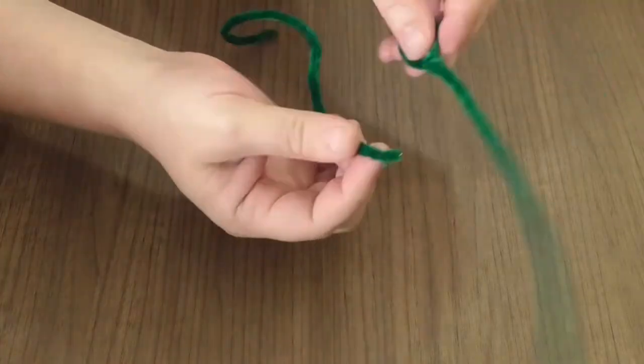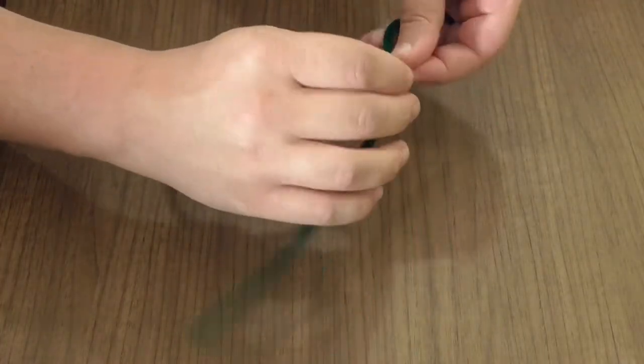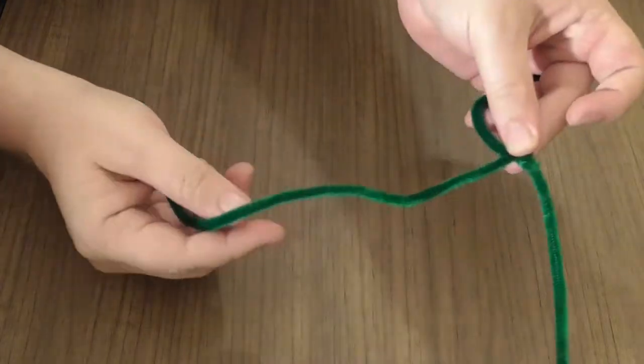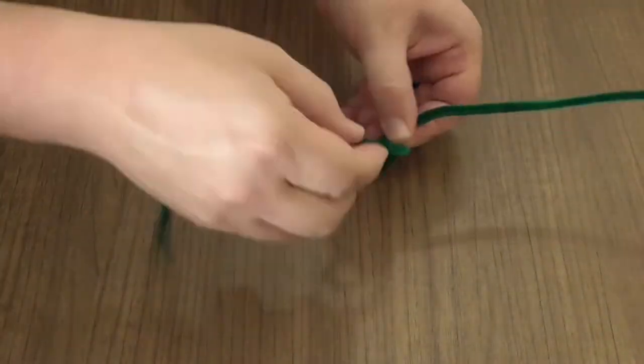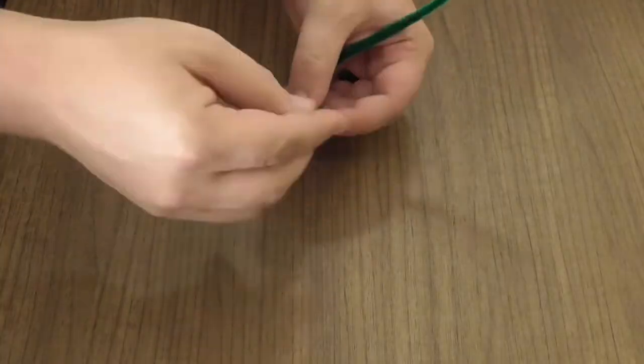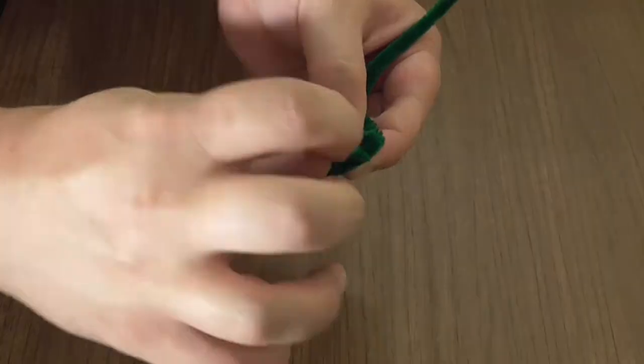Connect a second pipe cleaner to the neck of the chameleon. Use that pipe cleaner to wrap around the form of the head, giving it a little depth and essentially filling it in.